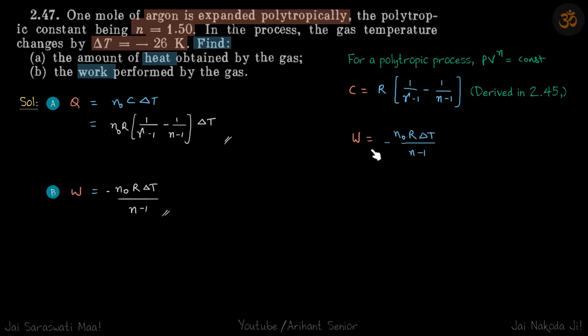So in the formula of work, gamma is simply replaced by n. So in the next lot of problems we are going to use both these formulas. So let's be very well comfortable with these. Heat is n naught C delta T, so we'll just put the value of C and this is our answer. And work done is directly this.